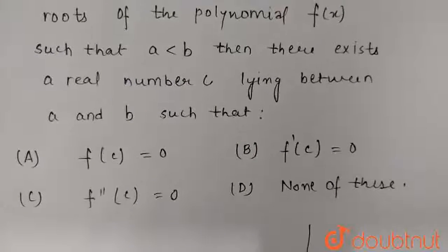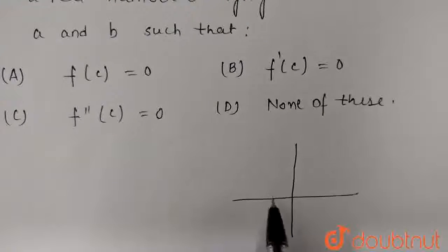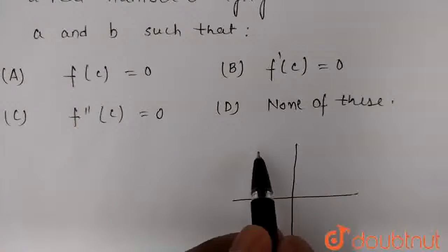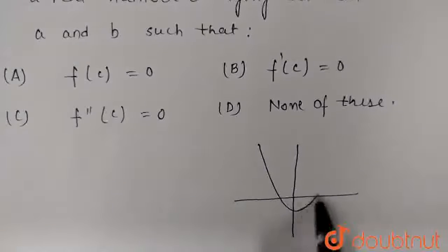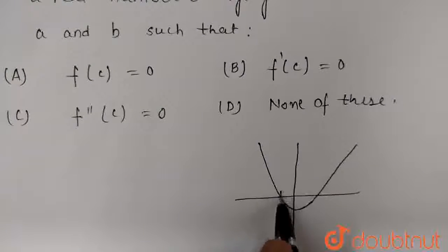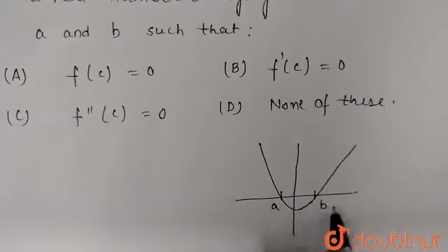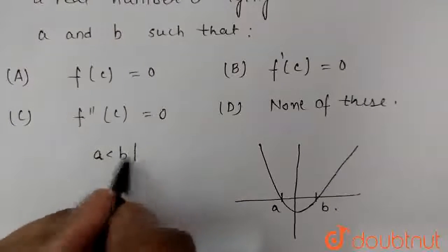So in this question, the graph according to the given condition will look somewhat like this. It has two real roots, A and B, and A is less than B.